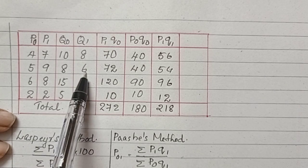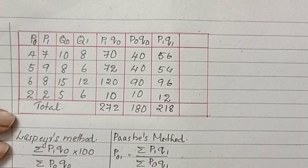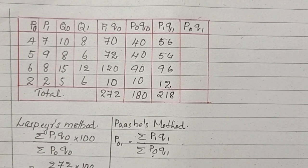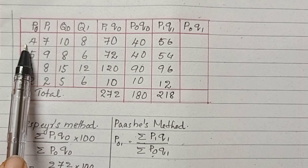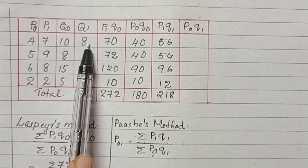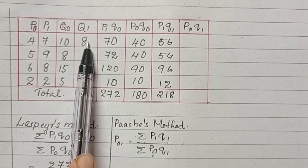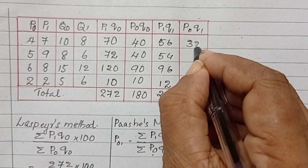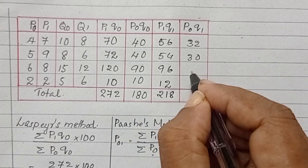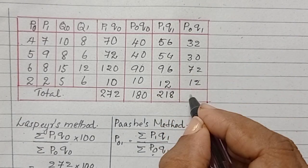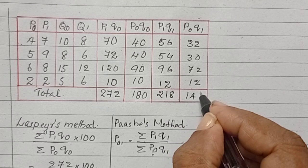Next one is P0 Q1. P0 into Q1 is 4 into 8, which is 32, then 30, 72. Adding all these numbers, we will get 146.